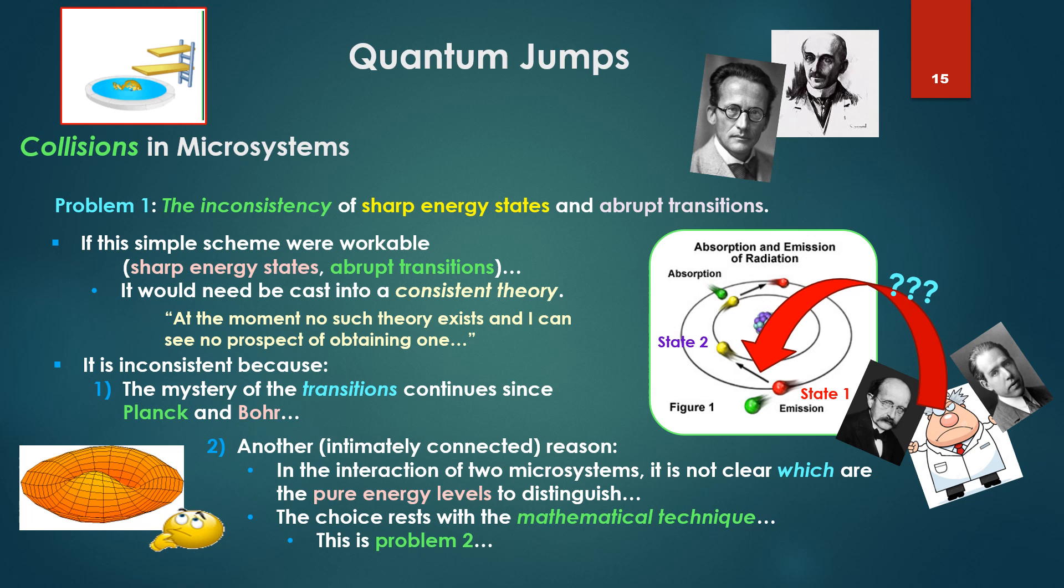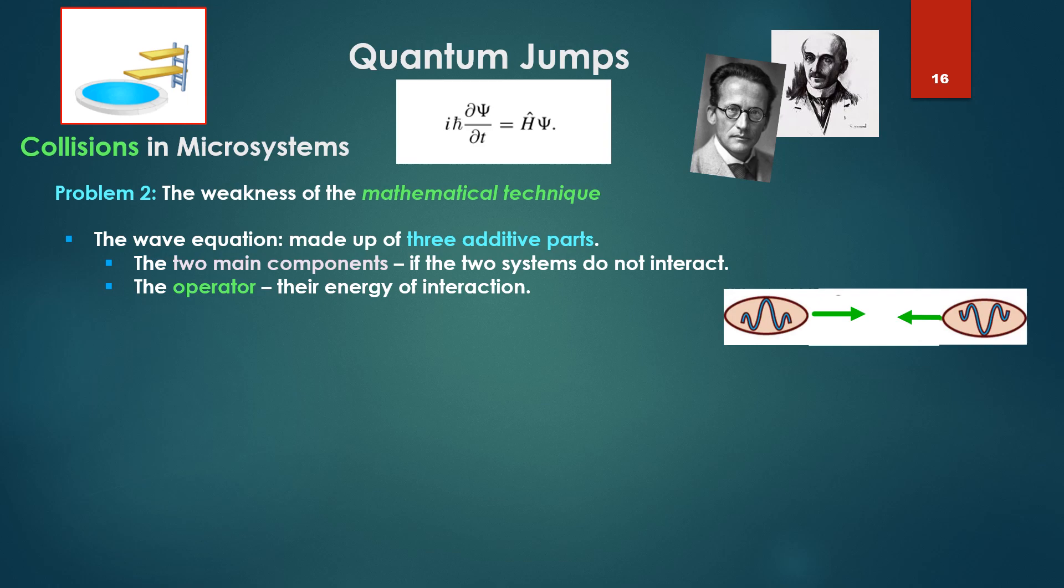It is inconsistent because the mystery of the transitions continues since Planck and Bohr. Another intimately connected reason, in the interaction of two microsystems, it is not clear which are the pure energy levels to distinguish. The choice rests with the mathematical technique, and this is problem number two.